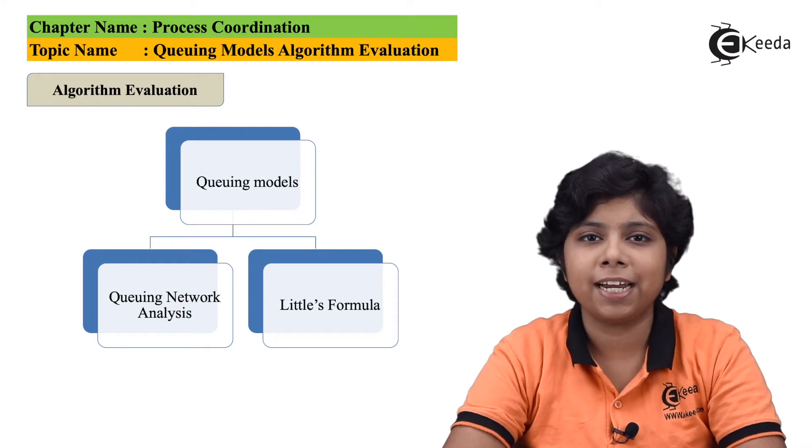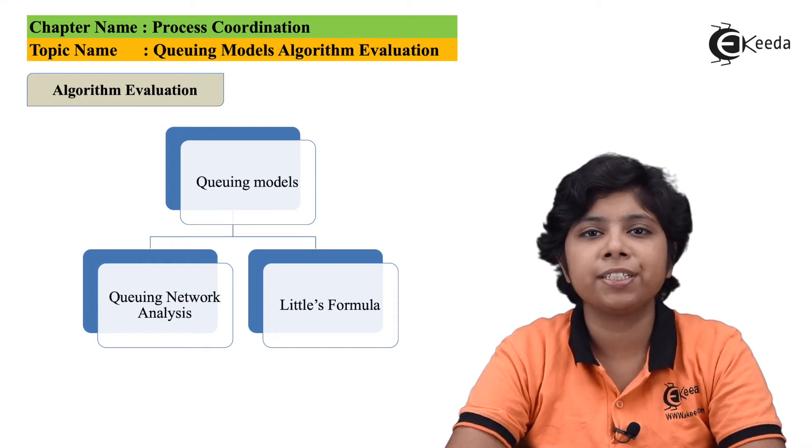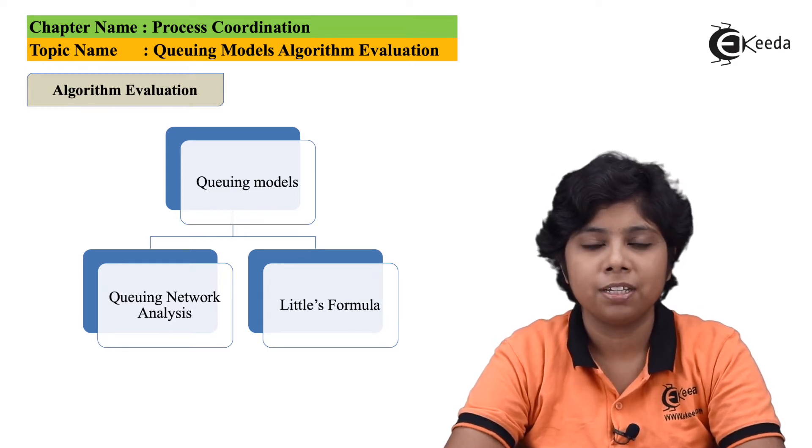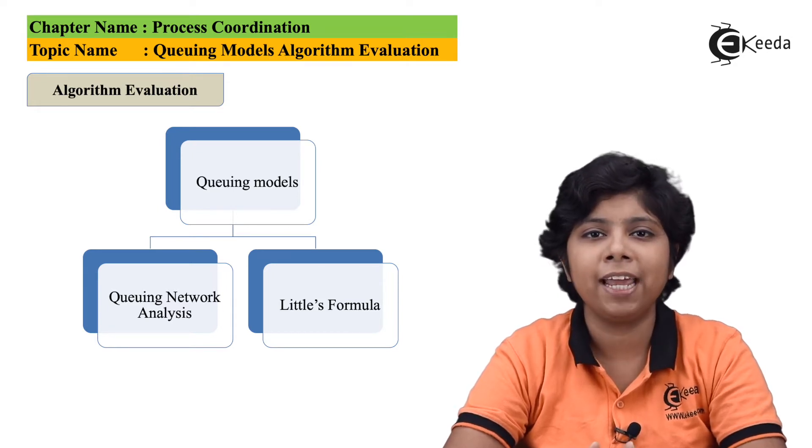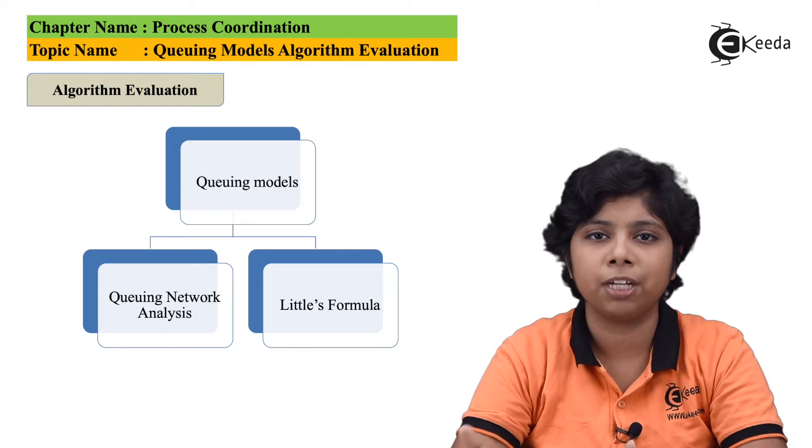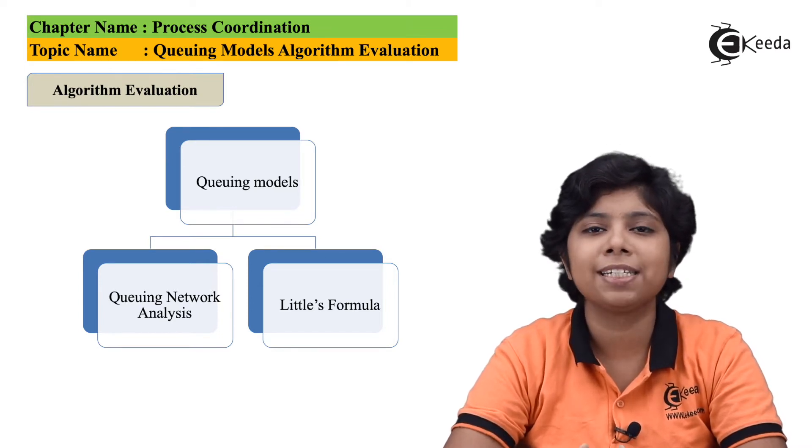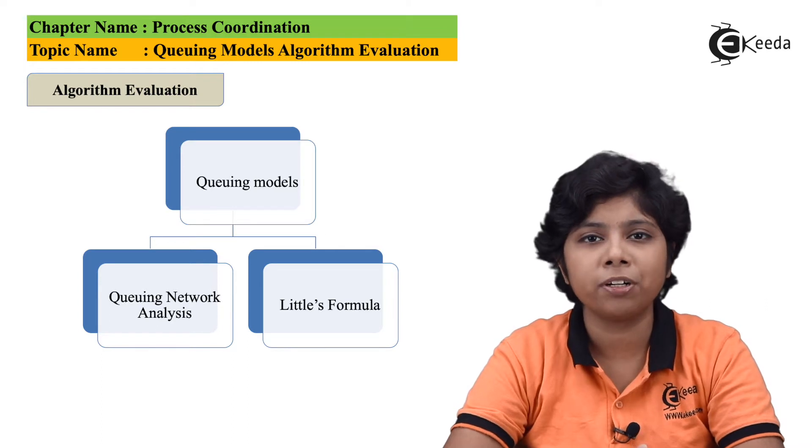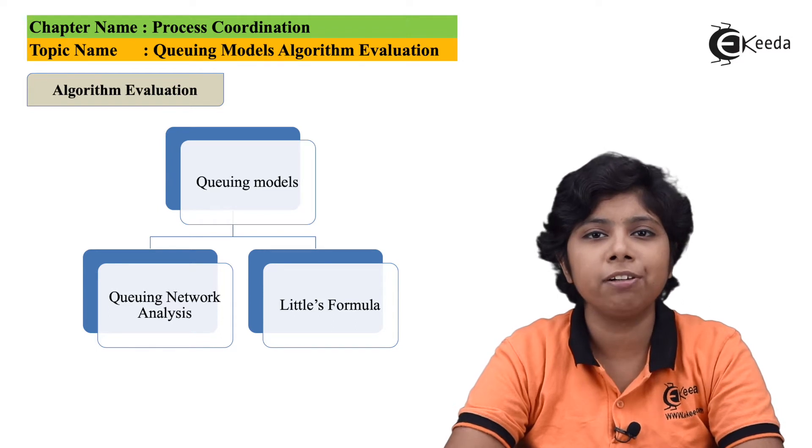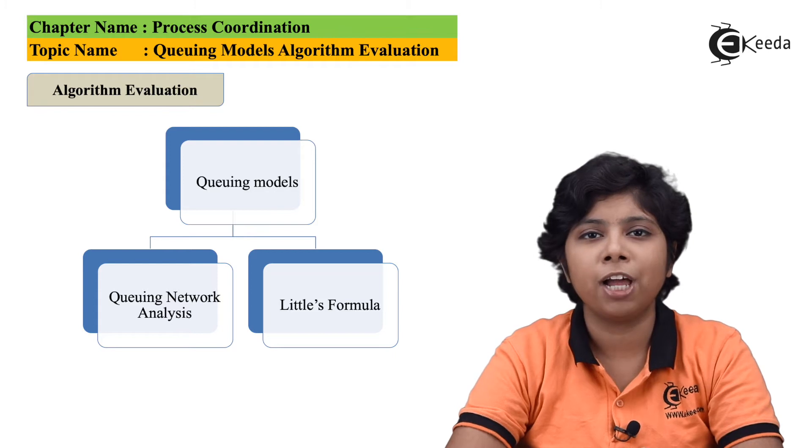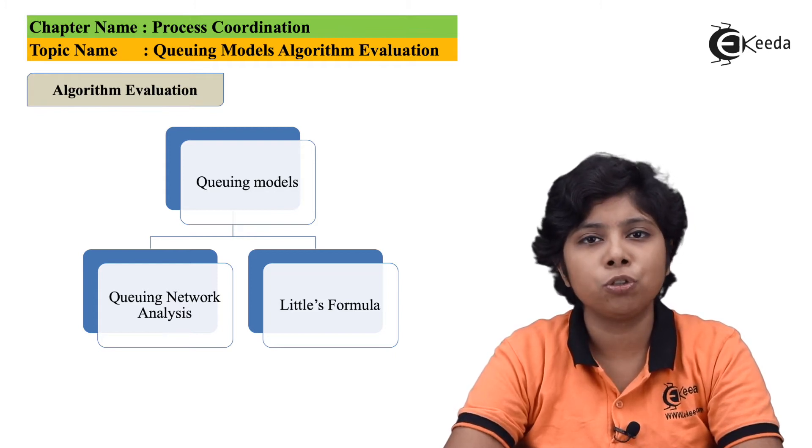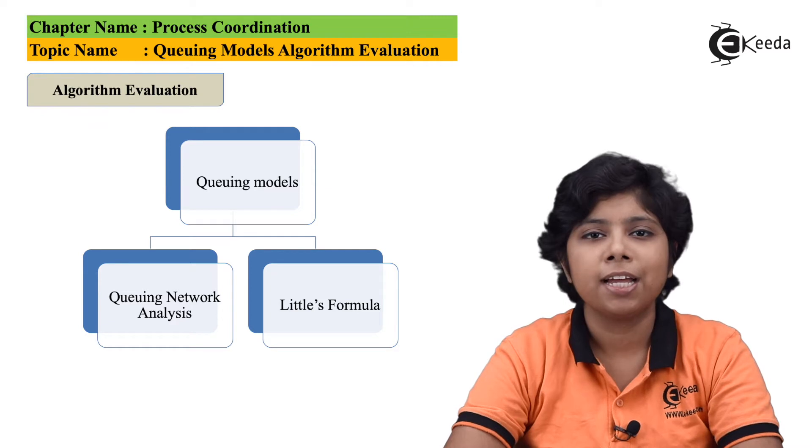If the system is in steady state, then the number of processes arriving in the system will be equal to the number of processes leaving the system. Now we can calculate a mathematical relation between them, that is n equals to lambda into w. This formula is known as Little's formula and this is very important and particularly useful because it is applicable to any scheduling algorithm and any arrival distributions. By this formula, we can actually calculate, if the two variations are known to us, the third variation.